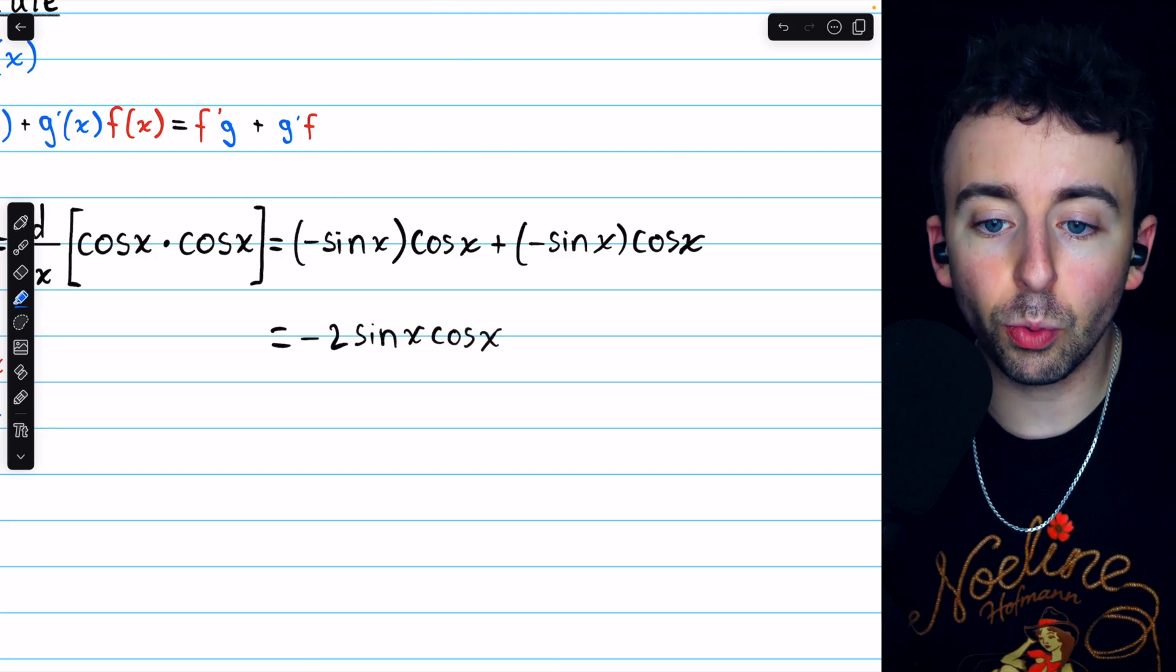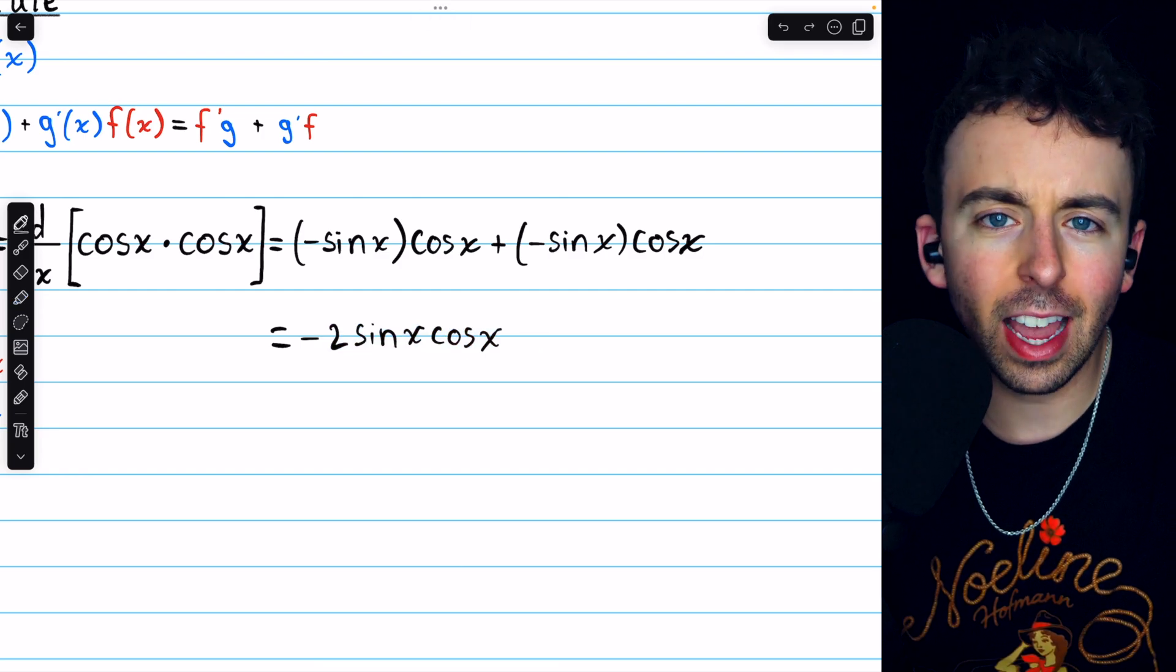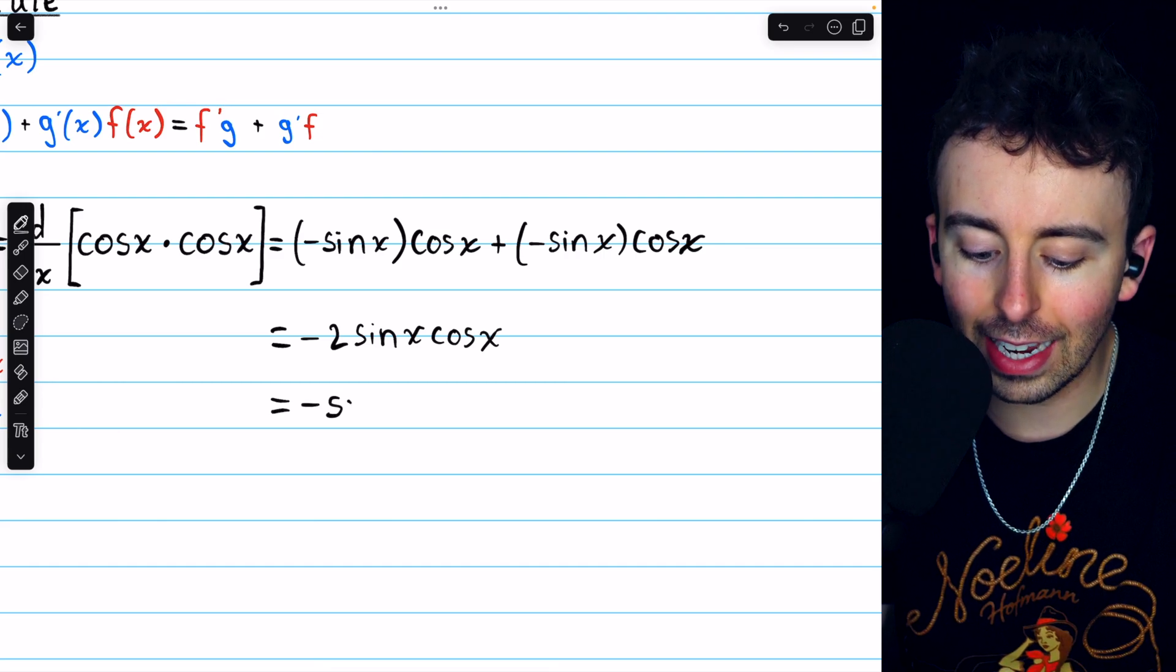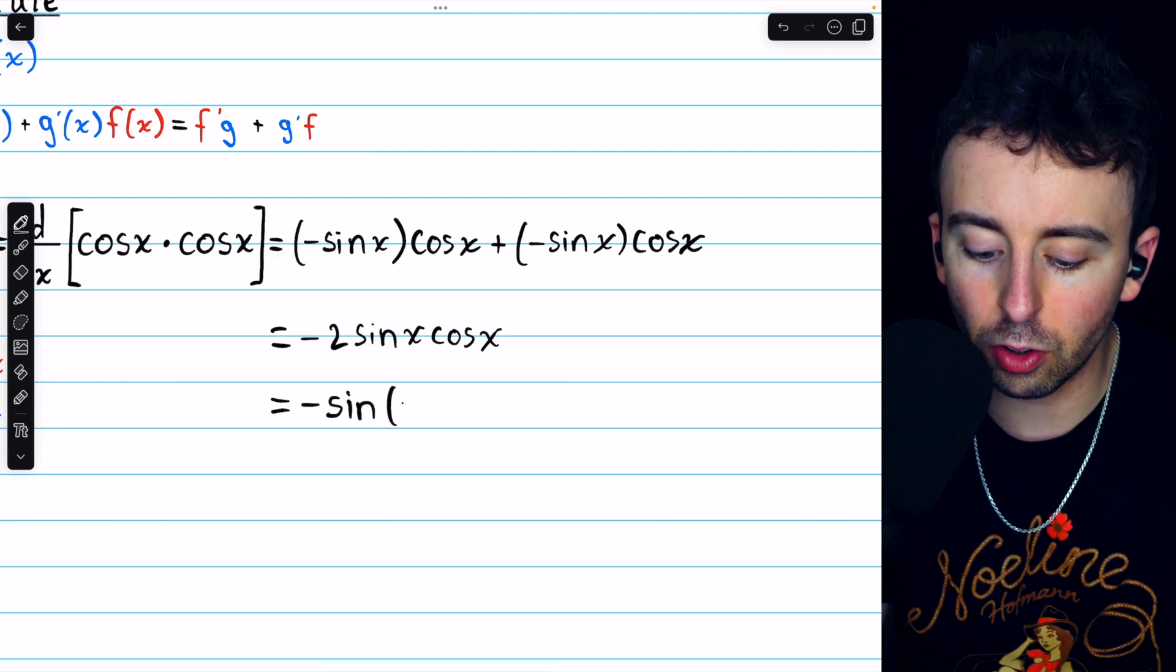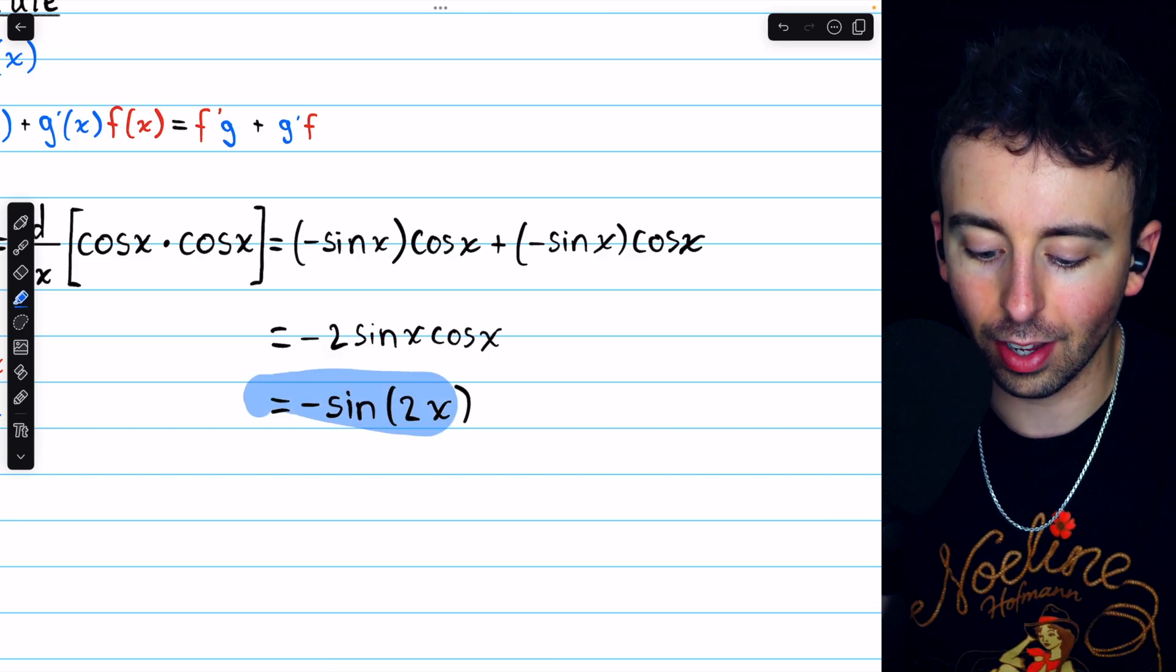If you know your trig identities, we can go one step further. Two sine cosine is the same as sine of two x, so we can finally write this as negative sine of two x. That's the derivative of cosine squared.